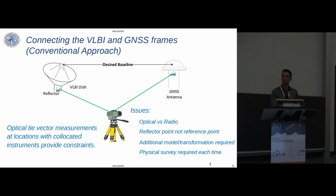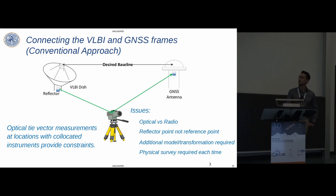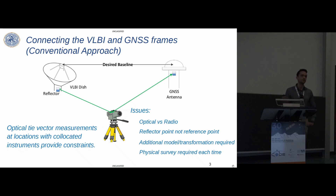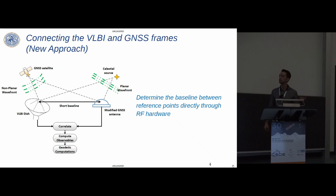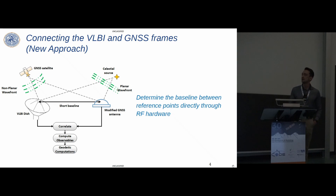The usual way this is done — the current state of the art — is with optical tie vector measurement. You take a total station theodolite and range to reflectors mounted on the space geodetic instruments. The challenge is that this is an optical technique, not a radio technique like VLBI and GNSS. You get precise local tie vectors between the reflectors, but an additional model is required to relate those reflector positions to the actual geodetic reference points.